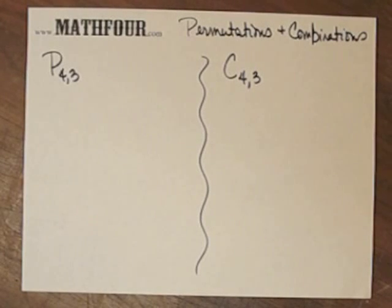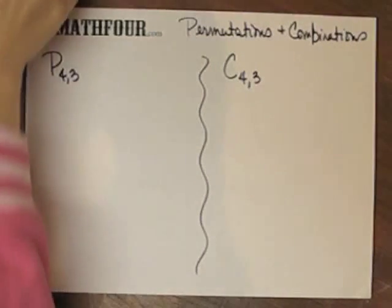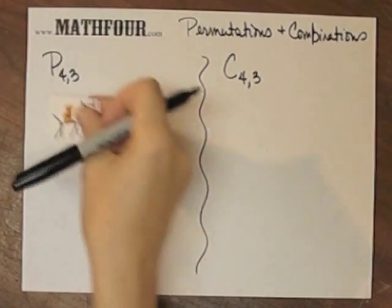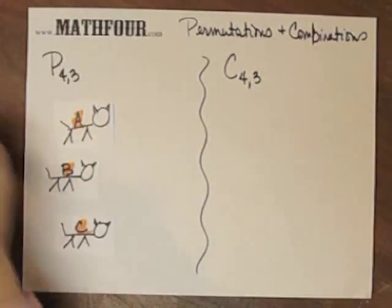Okay, here we are doing permutations and combinations, and we've got our cats A, B, C, and D.